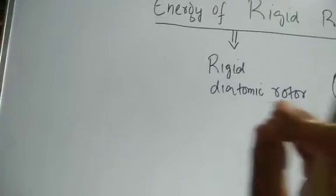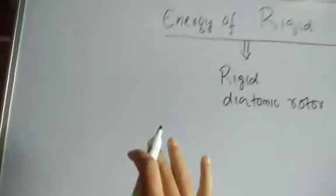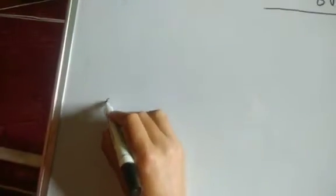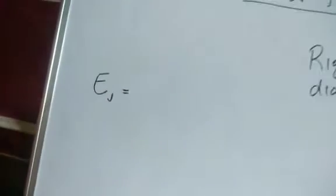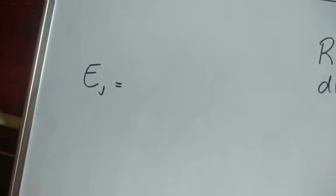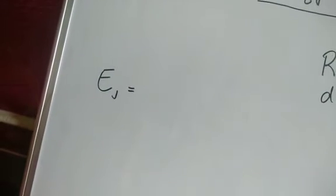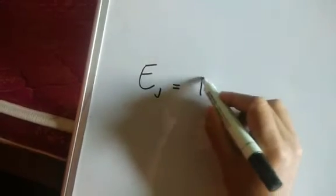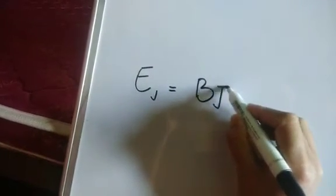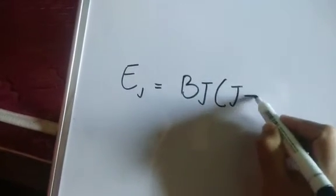I won't go through the derivation - the Schrödinger equation is usually used to derive this. The energy of a rigid rotor is noted by E, that is equivalent to BJ into J plus 1. Energy is given by BJ(J+1).